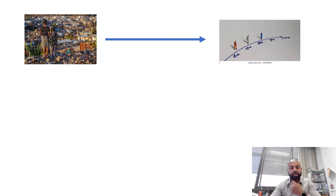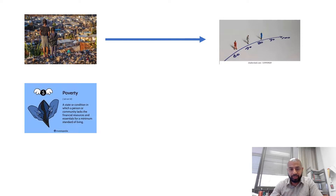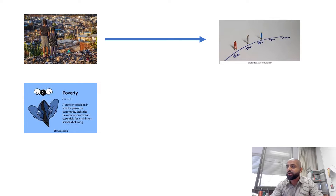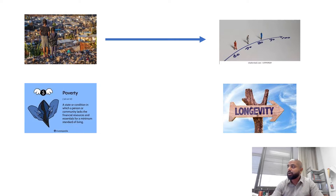First, I will explain what I mean by an intervening variable. For example, I am trying to establish that poverty has a relationship with longevity in society. Poverty, if you don't know what it means — it is a state or condition in which a person or community lacks the financial resources and essentials for a minimum standard of living, which means they are from a low socioeconomic status.